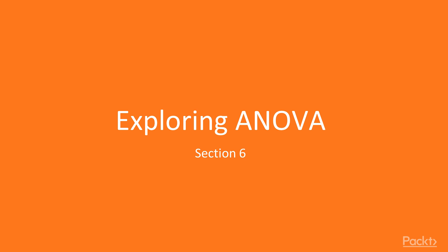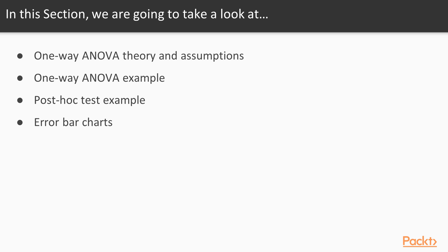Welcome to Section 6. In this section, we're going to talk about ANOVAs — specifically, the one-way ANOVA, both its theory and assumptions. We're then going to go through an example of how to do a one-way ANOVA, followed by an example of how to do a post-hoc test. And finally, we're going to graph the results of a one-way ANOVA using an error bar chart.